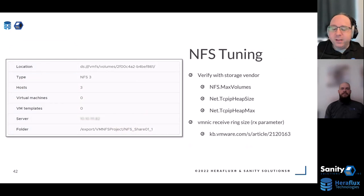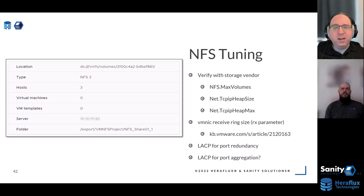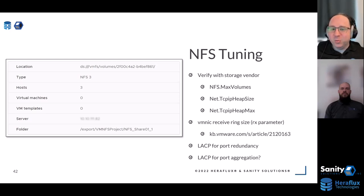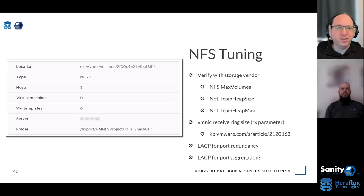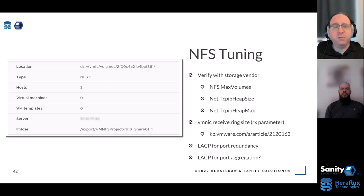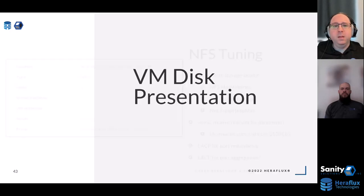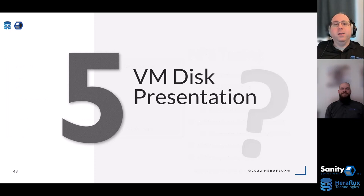If you're on NFS — like NetApp — check with the vendor, but there are tuning components there as well: max volume heap size, VM NIC ring size. There's a VMware article covering this. For NFS v3, it doesn't round-robin and won't use more than one connection for a given command, so you might want to think about LACP for port aggregation rather than just port redundancy. NFS v4.1 will do round-robin, so you may get better multipathing. Double-check all of that.